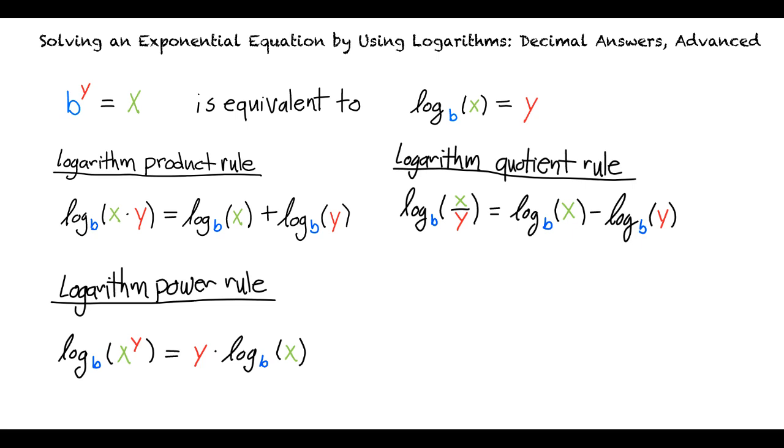The logarithm power rule says that the base b logarithm of x to the y power is equal to y times the base b logarithm of x.